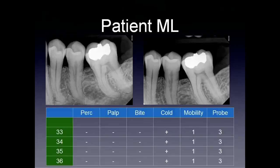Radiographically, we can certainly see that there is something going on on what appears to be the mesial aspect of this tooth, number 3-5, in the coronal middle third. Traditionally, we're taught to take off-angle radiographs, as we've done here, to help us try to discern if it's an internal versus external resorption. In this case, it doesn't appear that the lesion moves with our off-angle, and so one might conclude that it's an internal resorption.